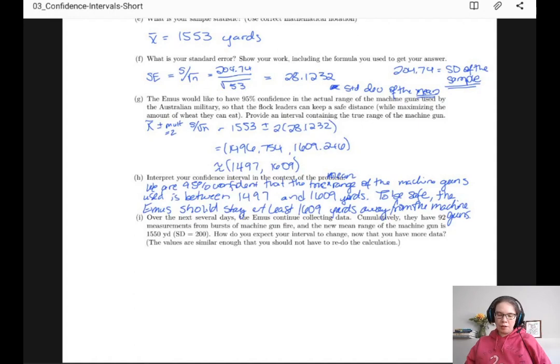Over the next several days, the emus continued to collect data. Cumulatively they have 92 measurements, and the new mean range is 1550 yards with a standard deviation of 200. How does your interval change now that you have more data?